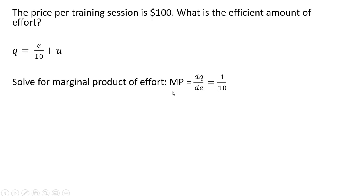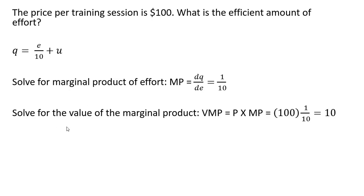So first we're going to solve for the marginal product of effort. We're going to take the derivative of this production function with respect to effort and we get back one-tenth. And then we're going to solve for the value of the marginal product, which is the price, $100, times marginal product, or $10.